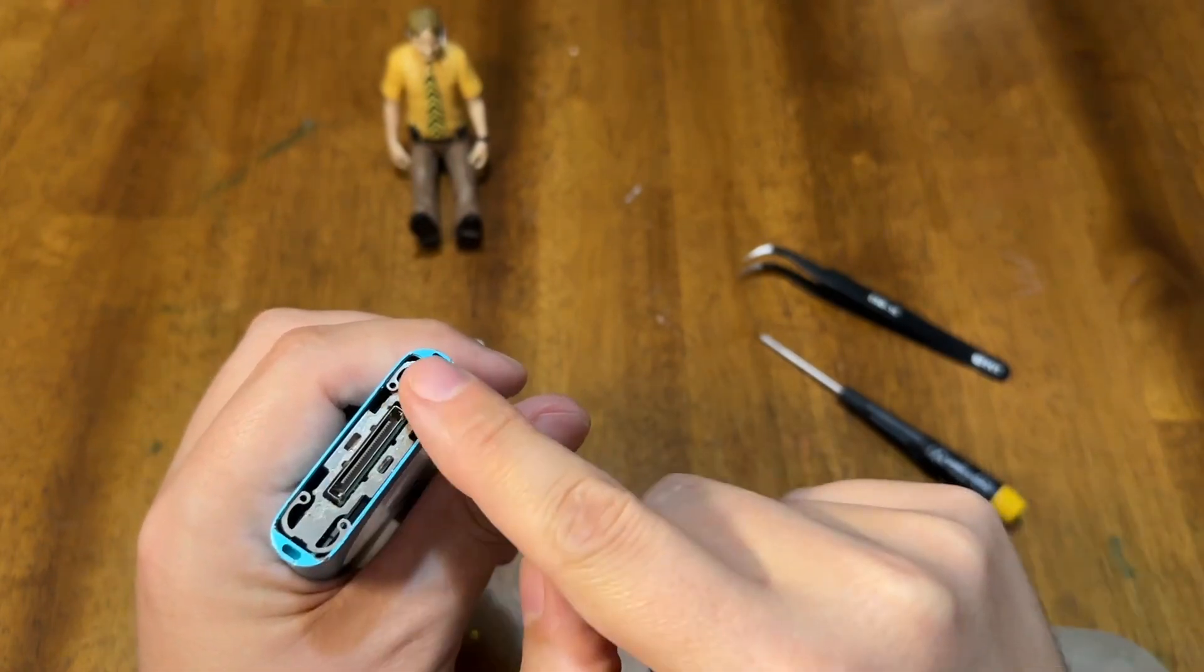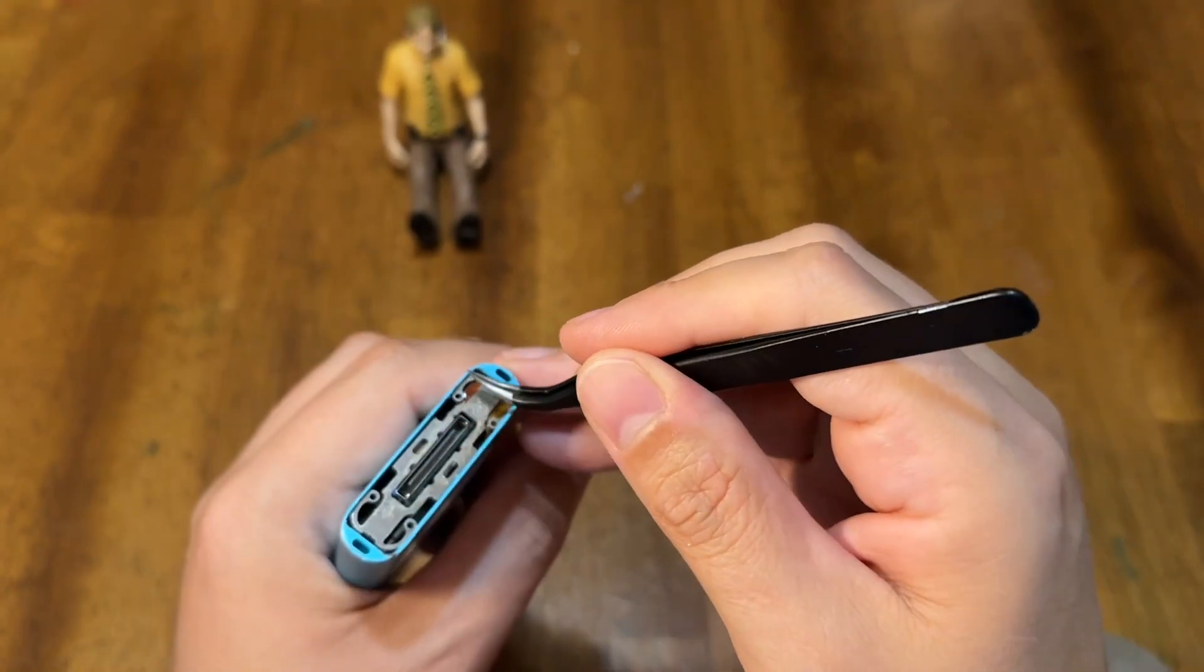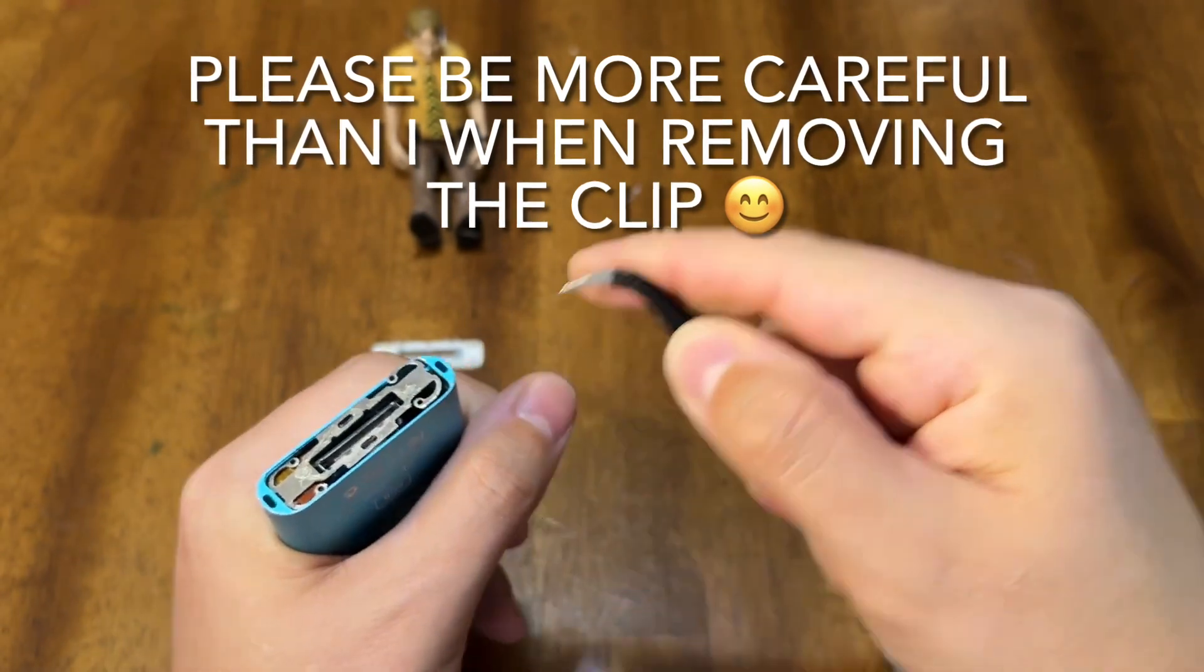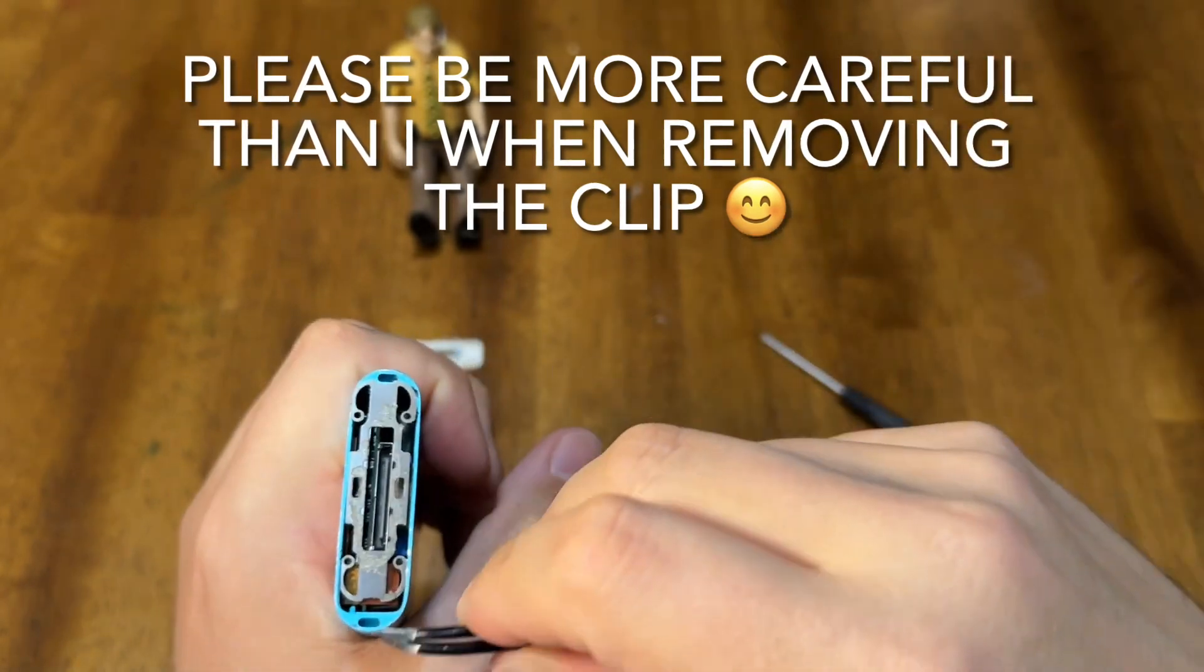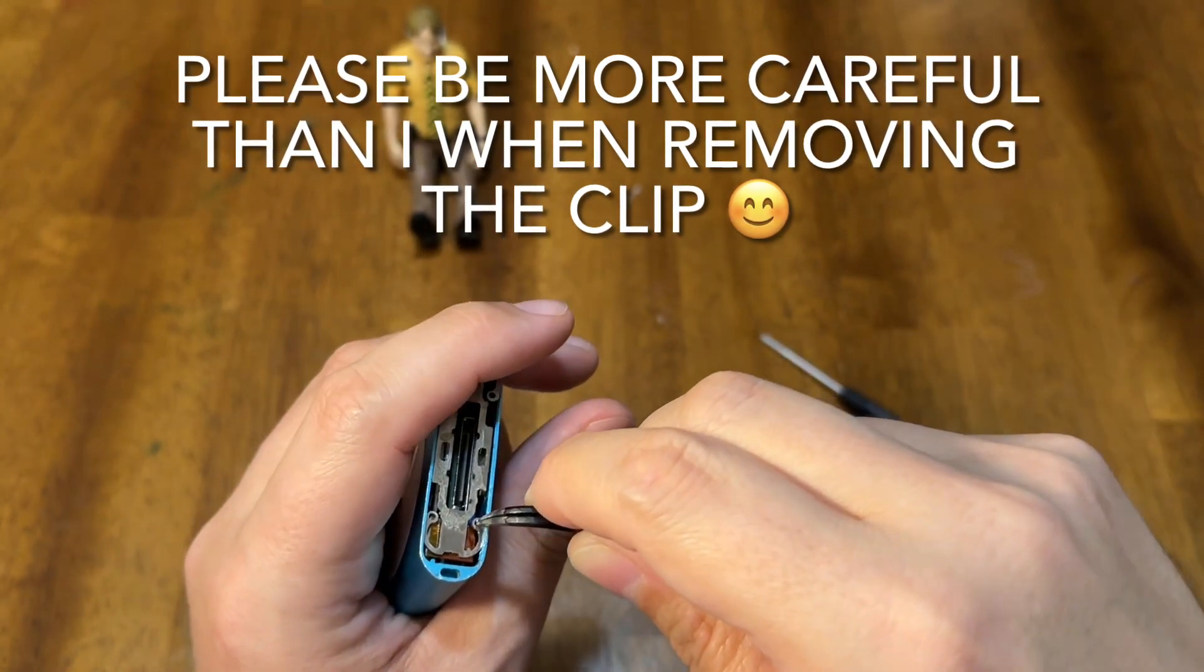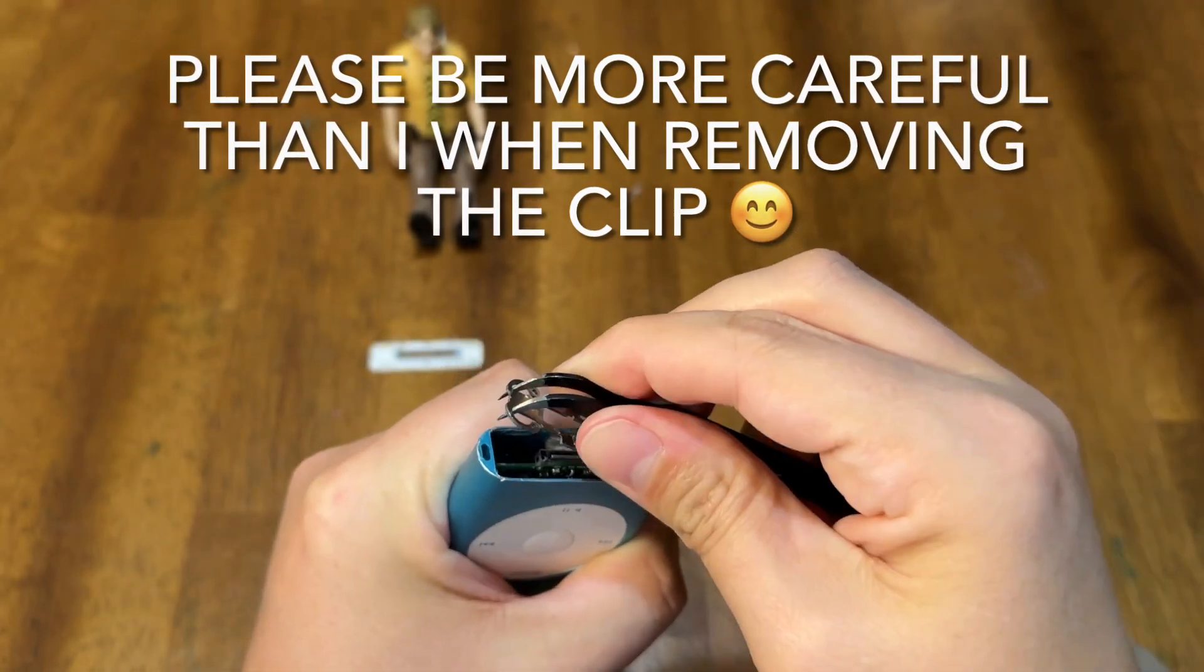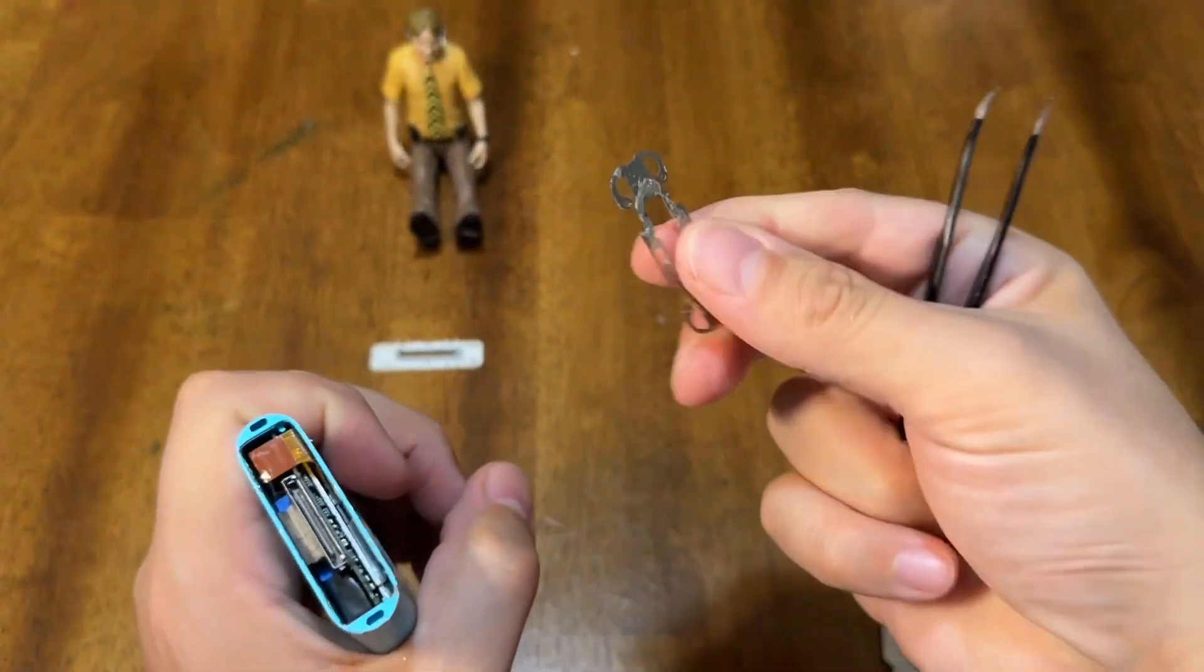Now this is the hardest part, is this clip. Right here you can see this is the click wheel ribbon cable. You do not want to damage that. So I'm just going to take some tweezers and I'm just going to kind of gently work on it. Want to stay as far away from that as you can. There you go.